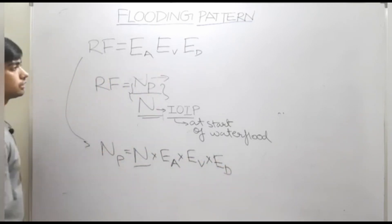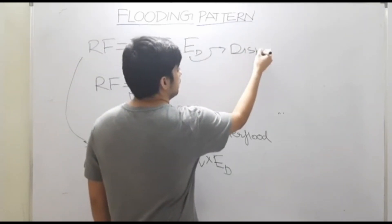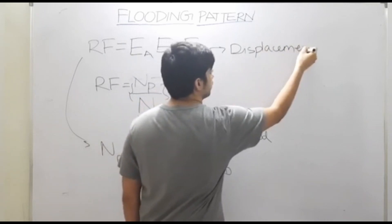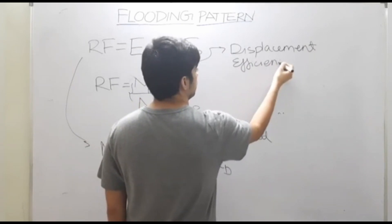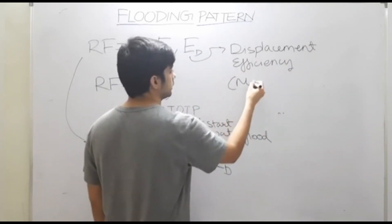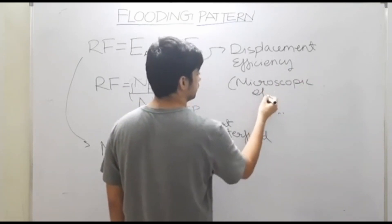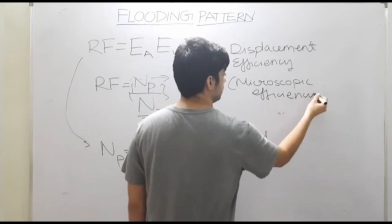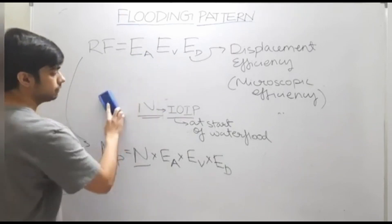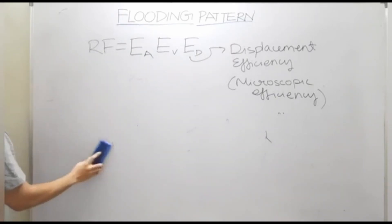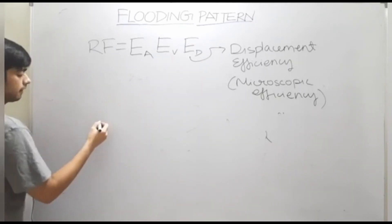I'll give you a brief idea about all these different terms. Ed is your displacement efficiency — we'll talk about all these parameters in more detail when required. It is also called microscopic efficiency. Similarly, Ea is called aerial efficiency.